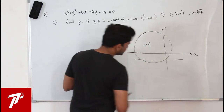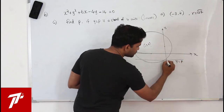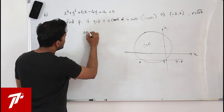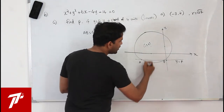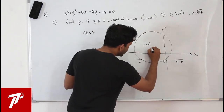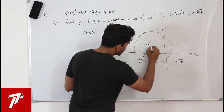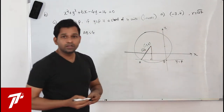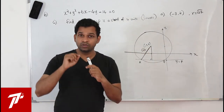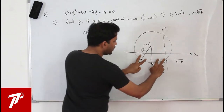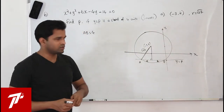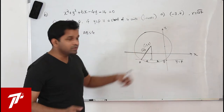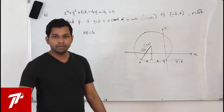Draw a perpendicular from the center to the chord, forming a right-angle triangle. The perpendicular from the center bisects the chord, so each half is 2 units. The hypotenuse is the radius sqrt(27). Using Pythagoras, the perpendicular distance cd = sqrt(27 minus 4) = sqrt(23).